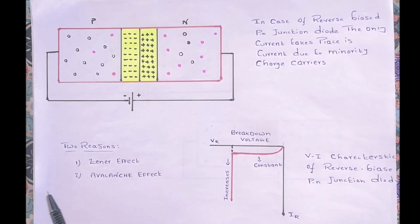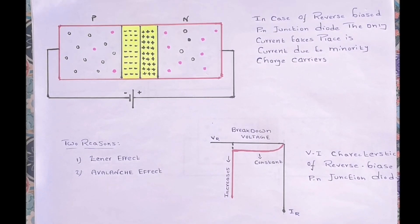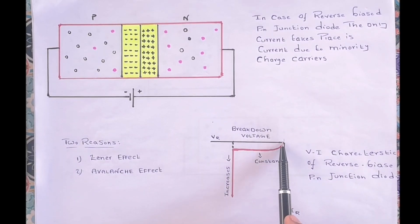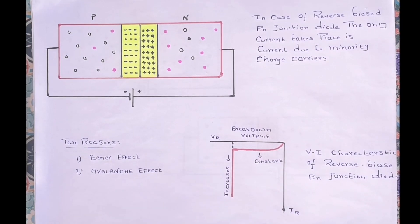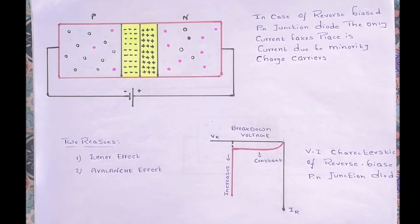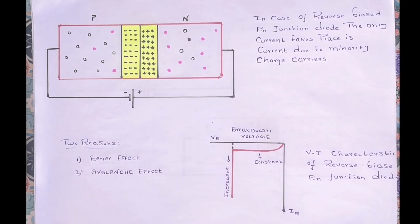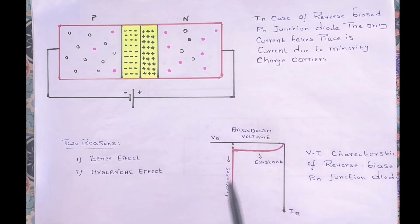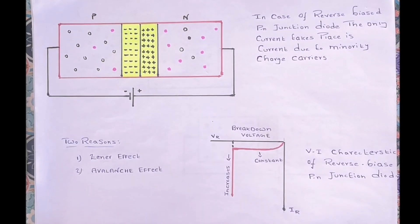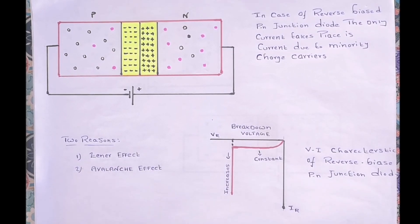As you can see here, this is the volt-amp characteristics of the reverse biased PN junction diode. Initially, if we increase the voltage, the current which flows due to minority charge carriers is constant. But when we keep increasing the voltage, suddenly at a certain point this current increases rapidly. The point of voltage where this current increases rapidly is called the breakdown voltage. There are two reasons for this sudden increase in current: the first is the Zener effect and the second is the avalanche effect.